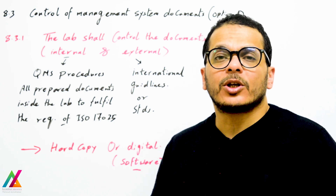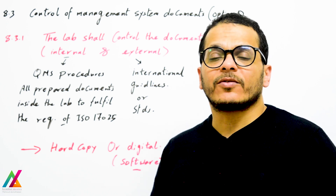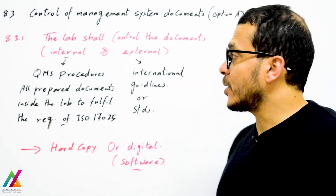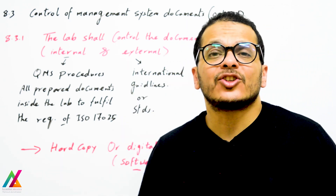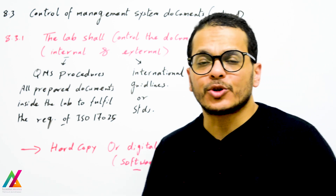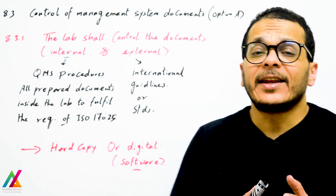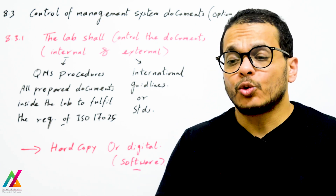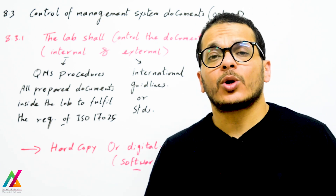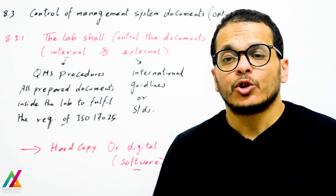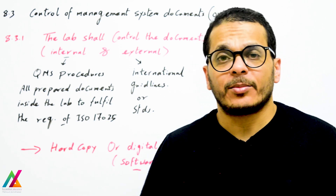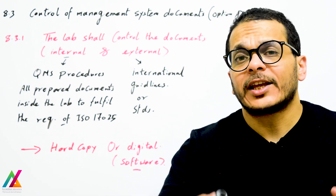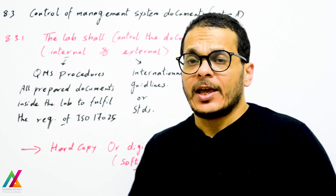Welcome back with a new lecture on ISO IEC 17025:2017 edition. Under the management system, we have control of management system documents. Option A: documents can be prepared inside the lab to fulfill the requirement of ISO IEC 17025 to perform any work inside the lab. Documents are created when the work needs to be done.